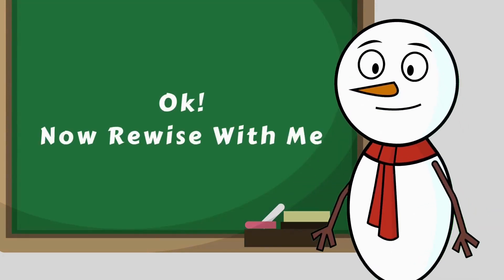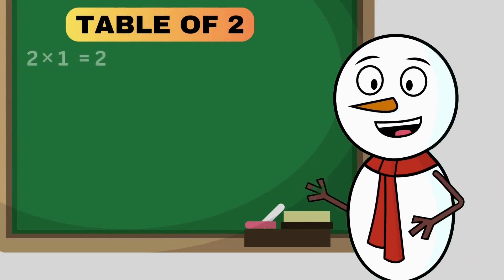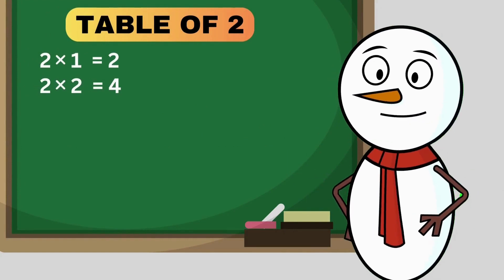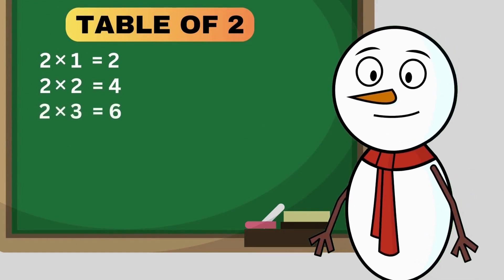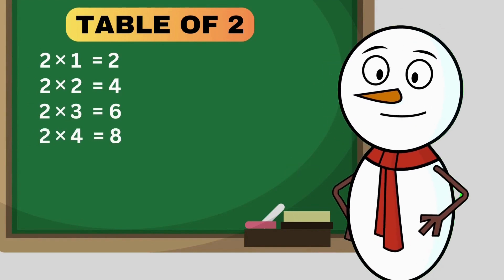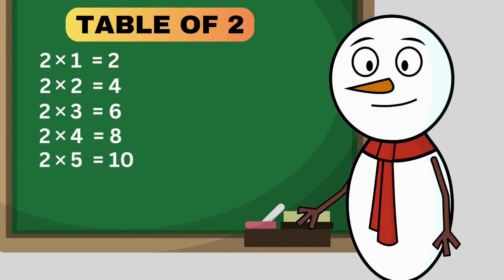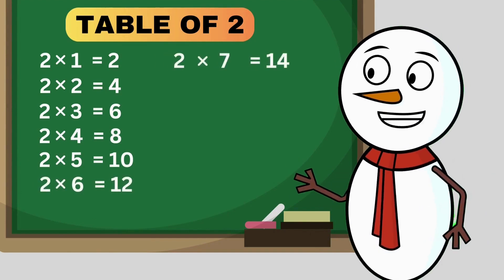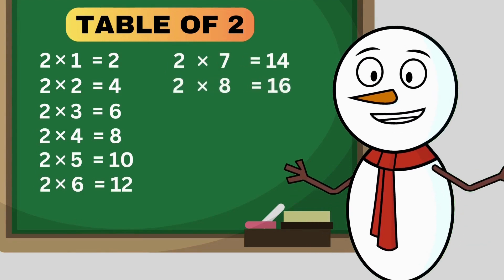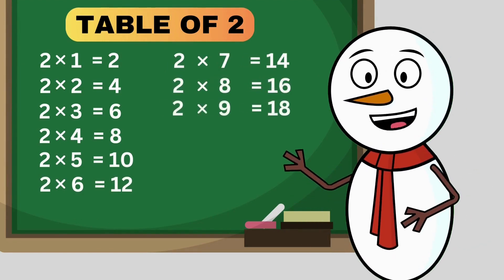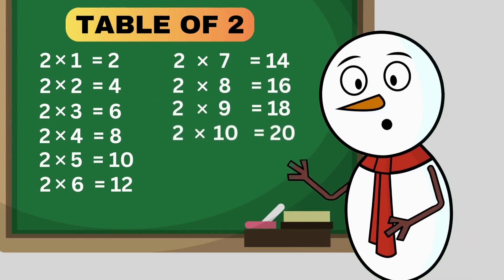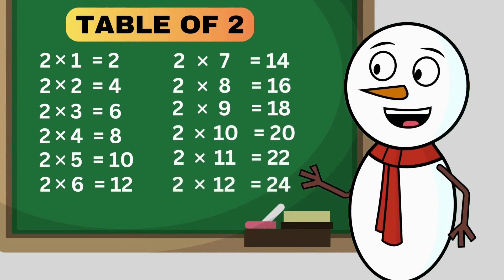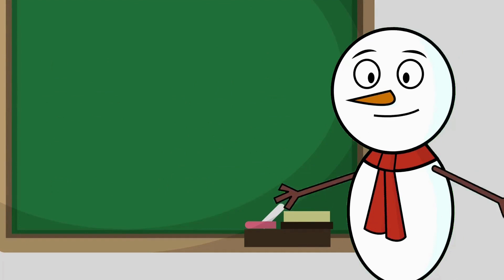Now revise with me. Table of 2: 2 times 1 is 2, 2 times 2 is 4, 2 times 3 is 6, 2 times 4 is 8, 2 times 5 is 10, 2 times 6 is 12, 2 times 7 is 14, 2 times 8 is 16, 2 times 9 is 18, 2 times 10 is 20, 2 times 11 is 22, 2 times 12 is 24. Now,